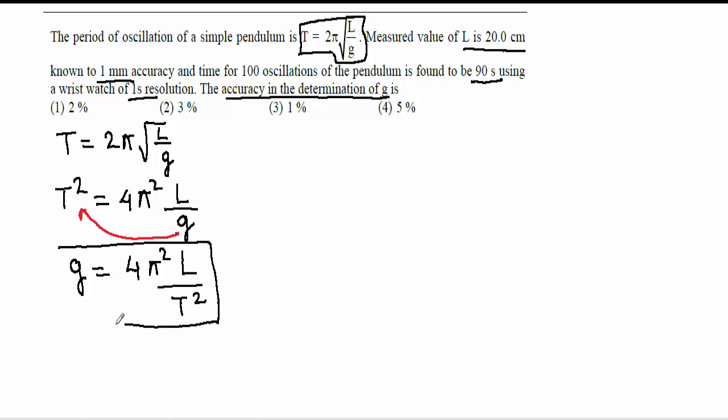Now we need to use the error formula for g. So for that, let's write the values of length. L equals value plus minus error. So value is given 20 centimeters for length, plus minus accuracy here is 1 millimeter. 1 millimeter you need to convert into centimeters, so that will give you 0.1 centimeter. You know value and accuracy both should be in same units.